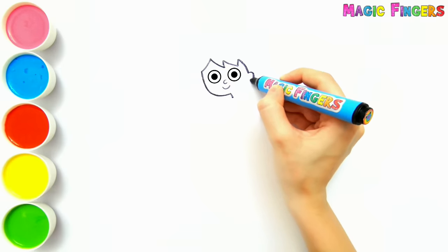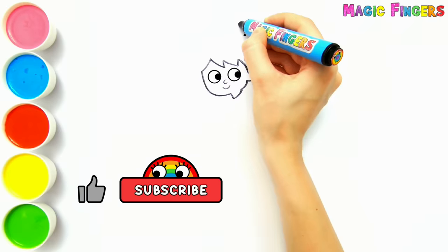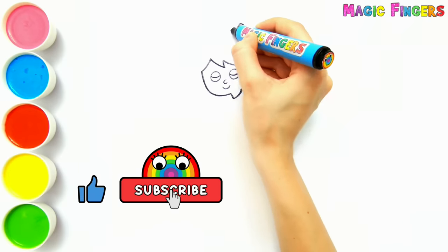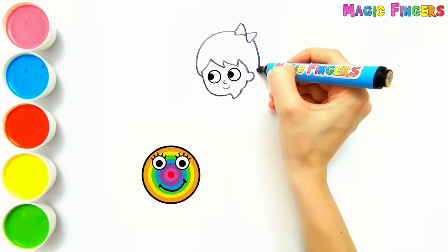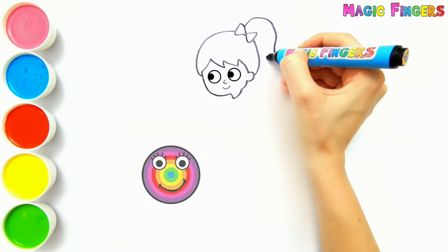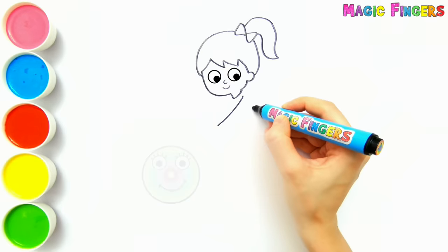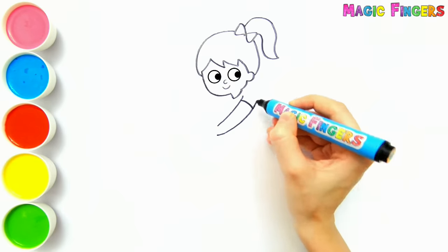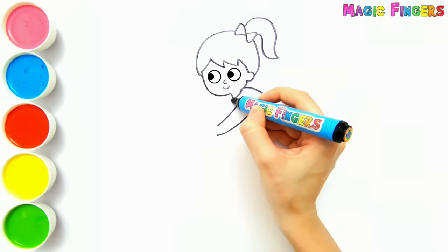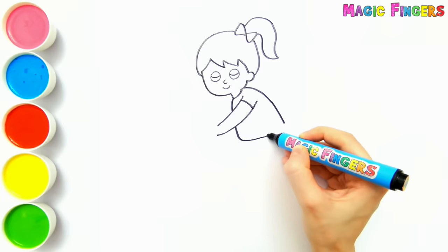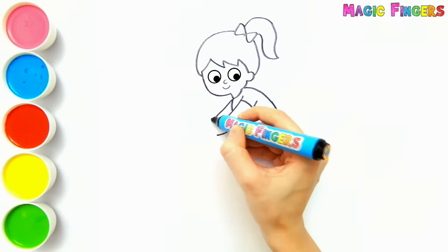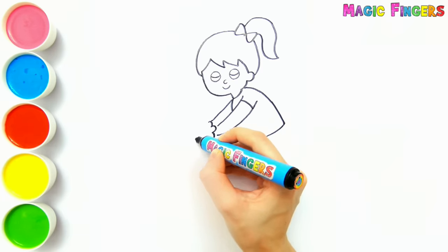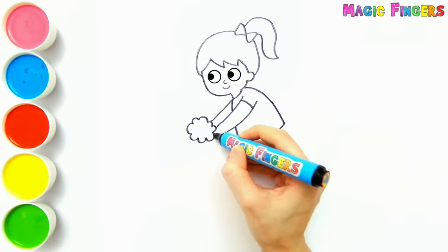First, I'm drawing a girl. Look! She's watching the drawing. Now I'm drawing her body. There are bubbles on her hands because she's washing her hands with soap.